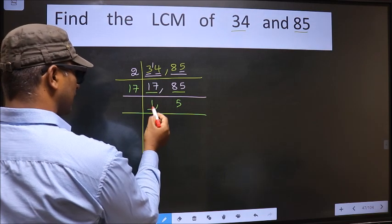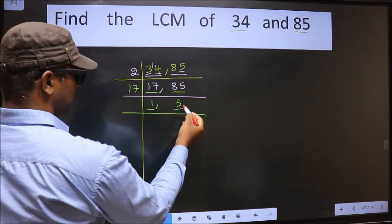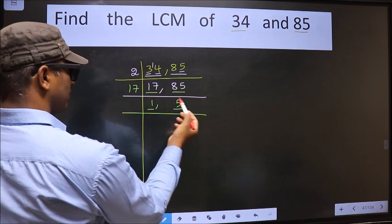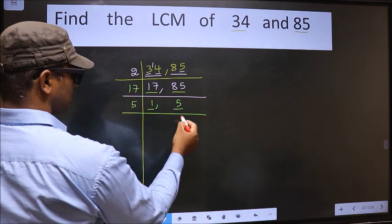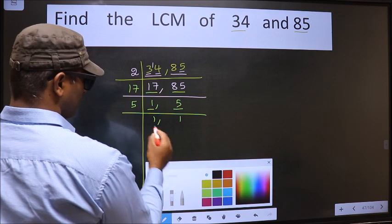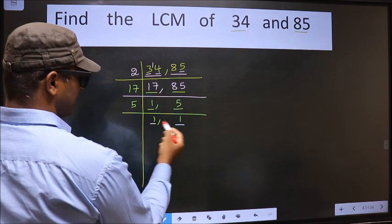We got 1 here so focus on the other number that is 5. 5 is a prime number so 5 once is 5. We got 1 in both places.